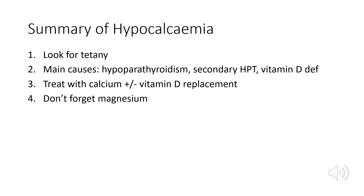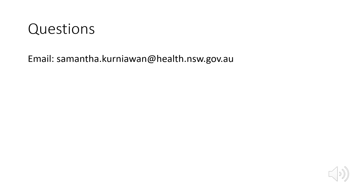Key takeaways for hypocalcemia: first, look for symptoms and signs of tetany. Think about the three major causes: lack of parathyroid hormone (hypoparathyroidism), secondary hyperparathyroidism, and vitamin D deficiency. Treat with calcium replacement — and sometimes vitamin D. Don't forget the magnesium, as concurrent hypomagnesemia must also be addressed to fix the calcium. That concludes this presentation on hyper and hypocalcemia. Feel free to email with any questions, good luck with your studies, and look forward to seeing you on the wards.